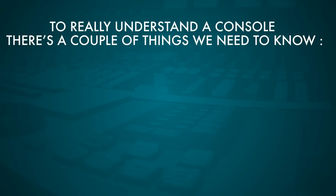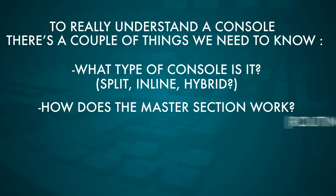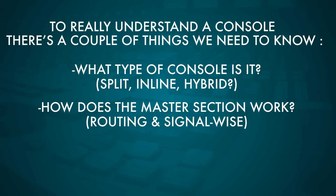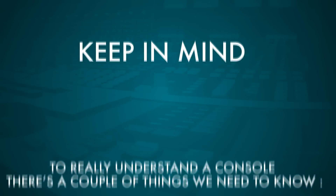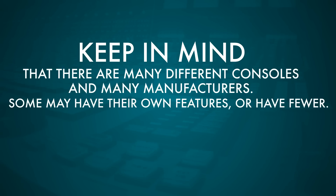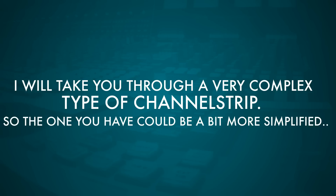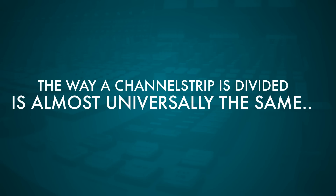To really understand the console we're going to be working with, we need to know a couple of things: the type of console we have, the master section routing, and the channel strip. Once we know one channel, we basically know all the channels. There are a lot of different mixing consoles and brands out there, so I'm going to take you through a complex channel strip — yours could be more simplified — but the way the channel strip is divided is almost universally the same.